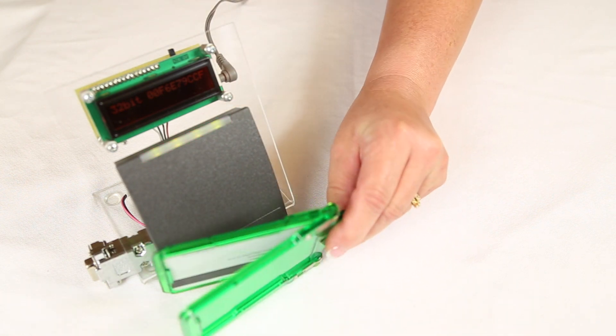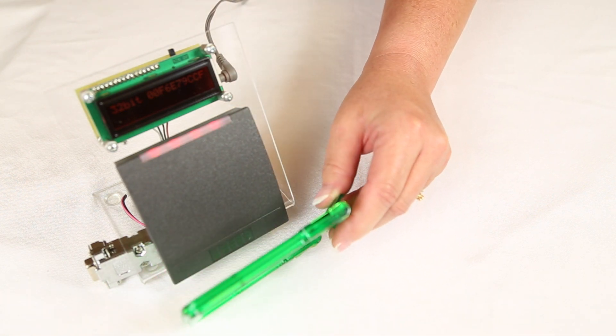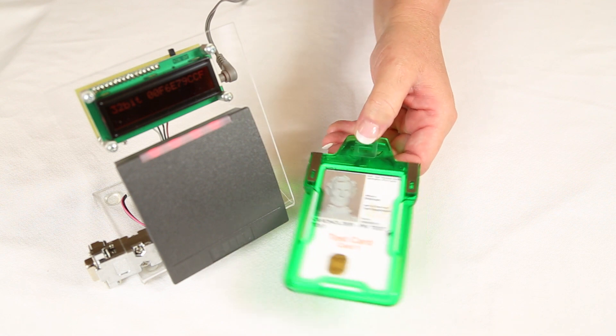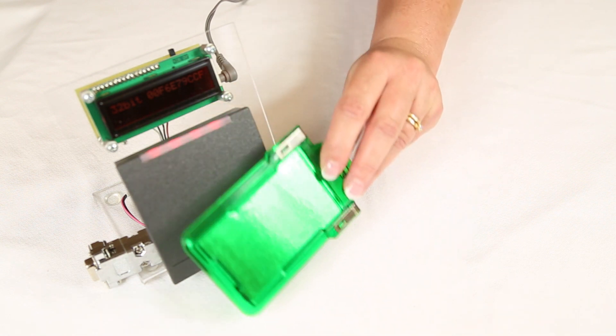When you want your card to be read by a reader, simply squeeze the two tabs at the top, removing the card away from the shielding device. Your card can now be read.